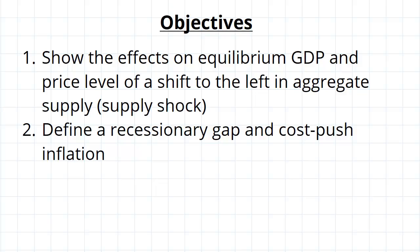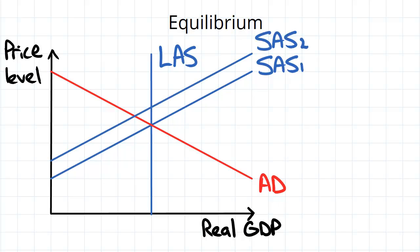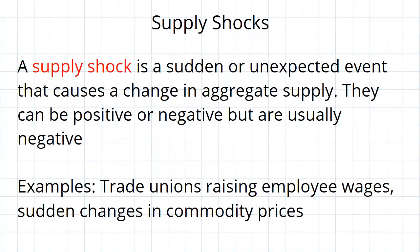So imagine once again we've got our equilibrium — initially we may have short-run equilibrium equal to long-run equilibrium. But then all of a sudden something happens and short-run aggregate supply gets shifted to the left. This sudden event that caused this shift in aggregate supply is what we call a supply shock.